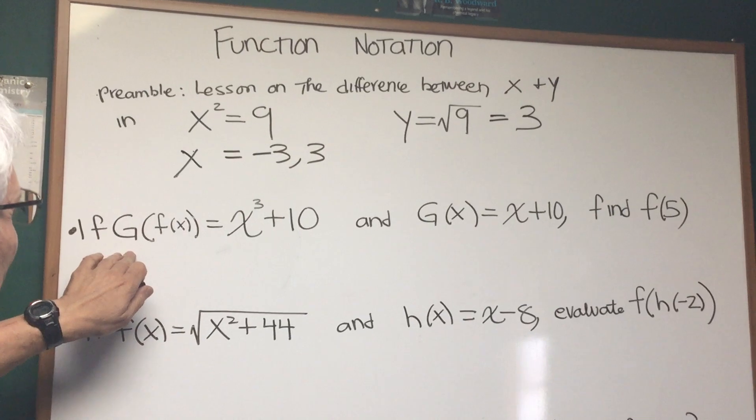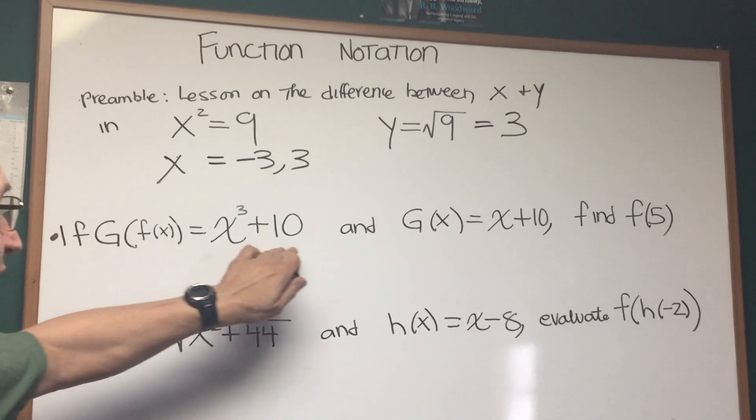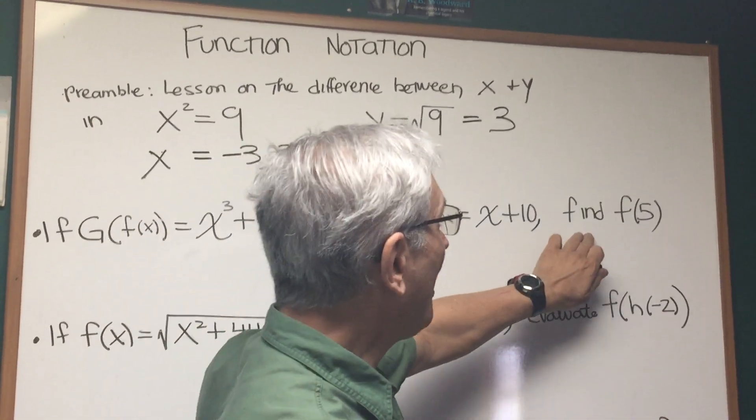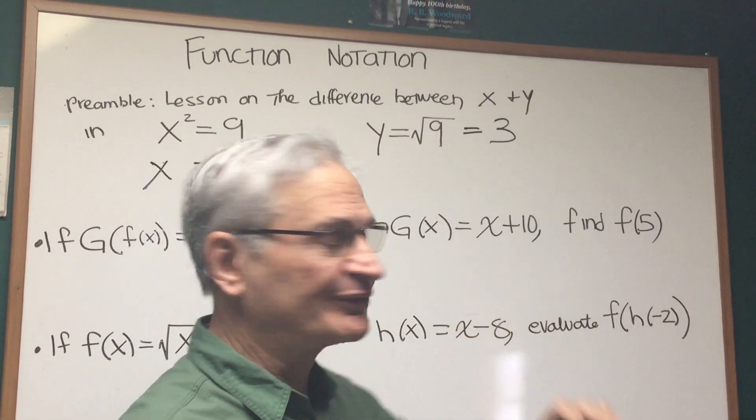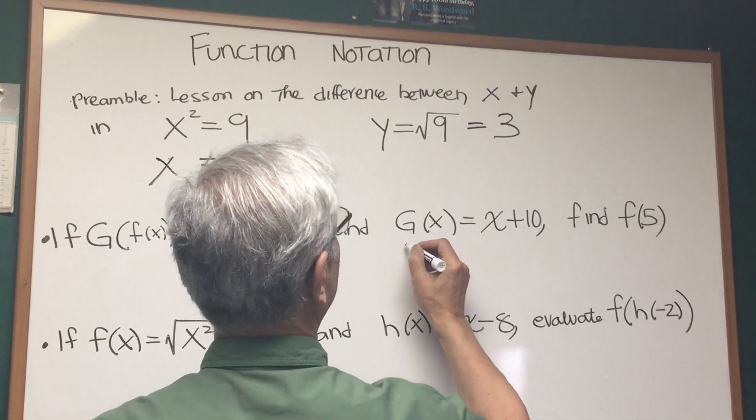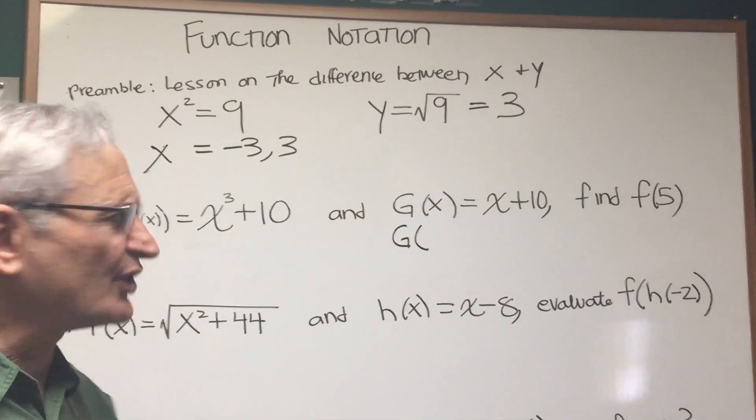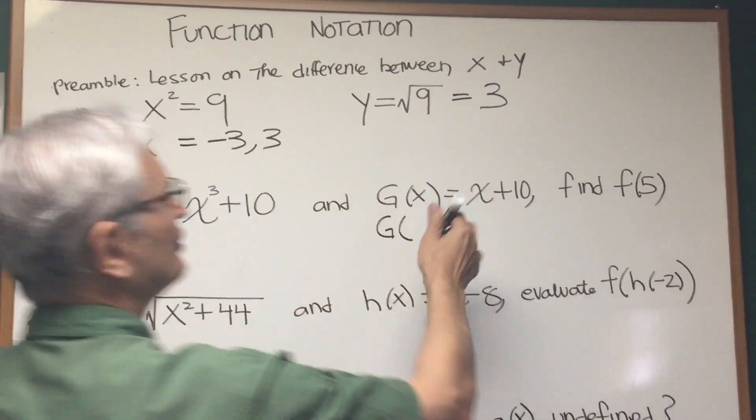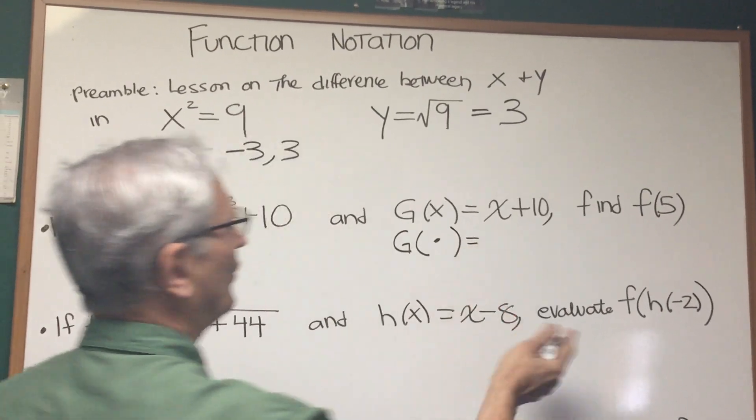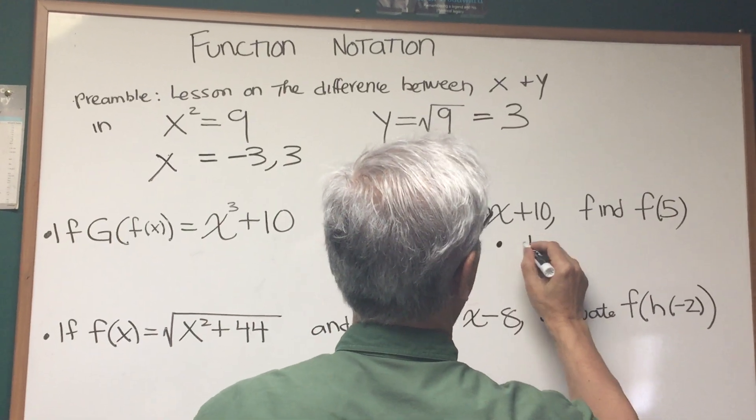Let's read this first problem in function notation. If g of f of x equals x to the third plus 10 and g of x equals x plus 10, find f of 5. Well let's start out with this definition of g of x. How do we operate with function notation? Here's the way I like to teach function notation. You have a function that's defined in terms of x. Let's turn off the x. Whenever we turn off the x on the left, we're going to turn off the x on the right.